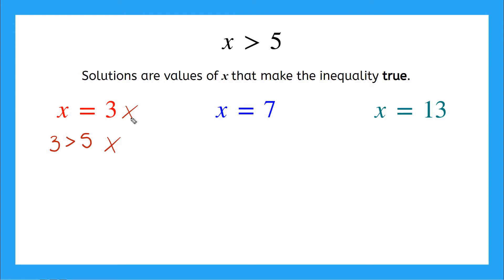Let's try the next one. So here we'll just substitute our 7 in for x and we'll have 7 is greater than 5. Is that a true inequality? Yeah, that is true. 7 is greater than 5. So that means when x equals 7, we do have a solution.